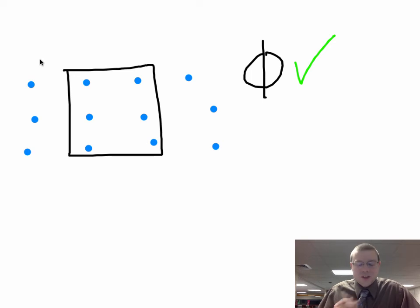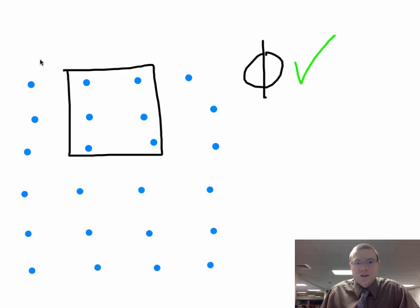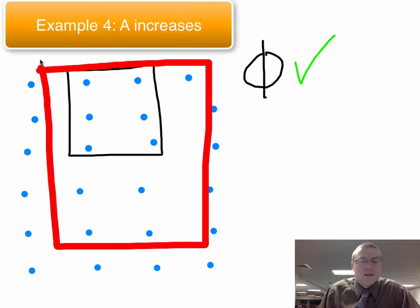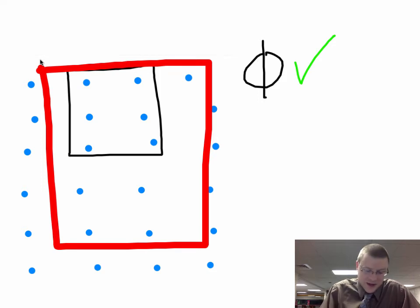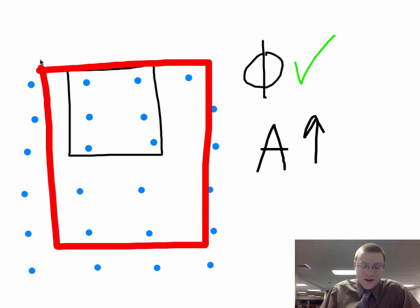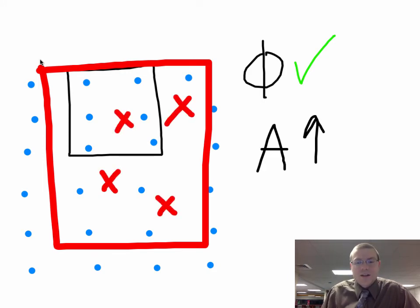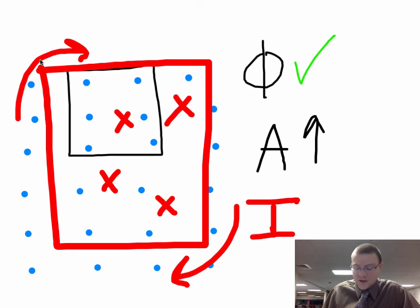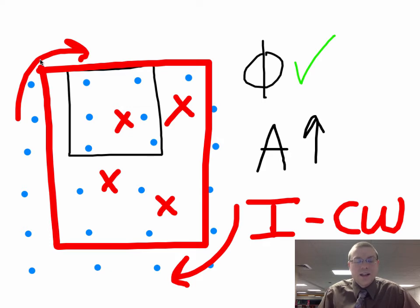In all those examples we just changed the magnetic field, but flux also depends on the number of loops, the area, and the angle. Let's return to the original scenario with six dots of magnetic field coming out of the page. If the area of the loop increases, there was flux originally but now we have more — more dots are trapped in the larger red area than in the original black area. The loop wants to maintain the original flux, so it sends its own magnetic field back into the page to counteract the increase. To send magnetic field into the page, you send currents in the clockwise direction.